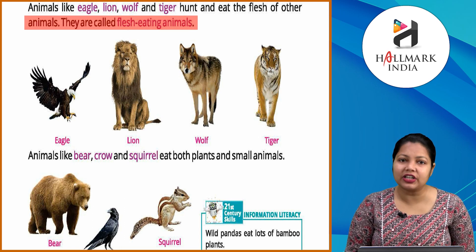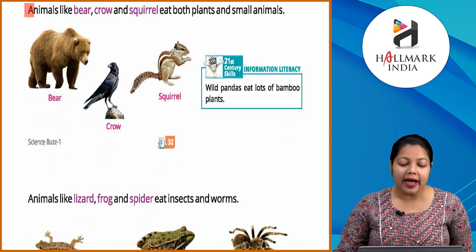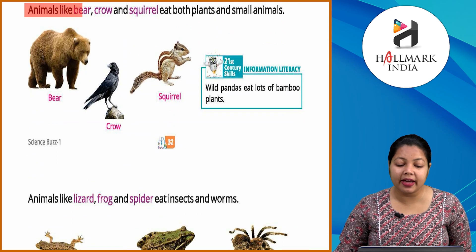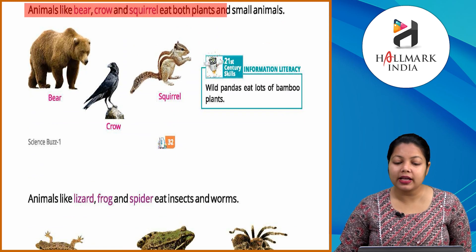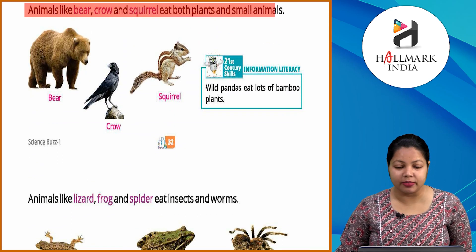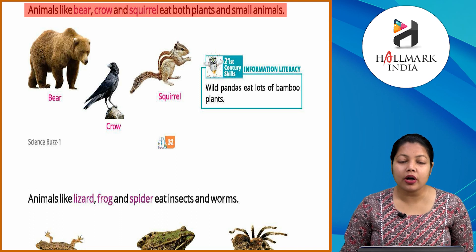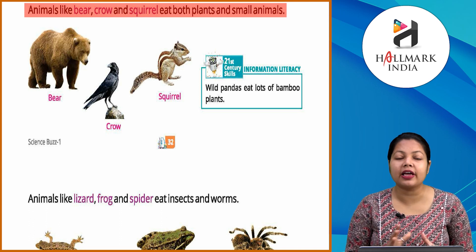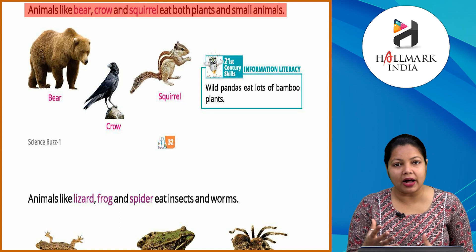Animals like bear, crow and squirrel eat both plants and small animals. Bear, crow and squirrel — these animals eat both plants and animals. They are called plant and flesh eating animals.